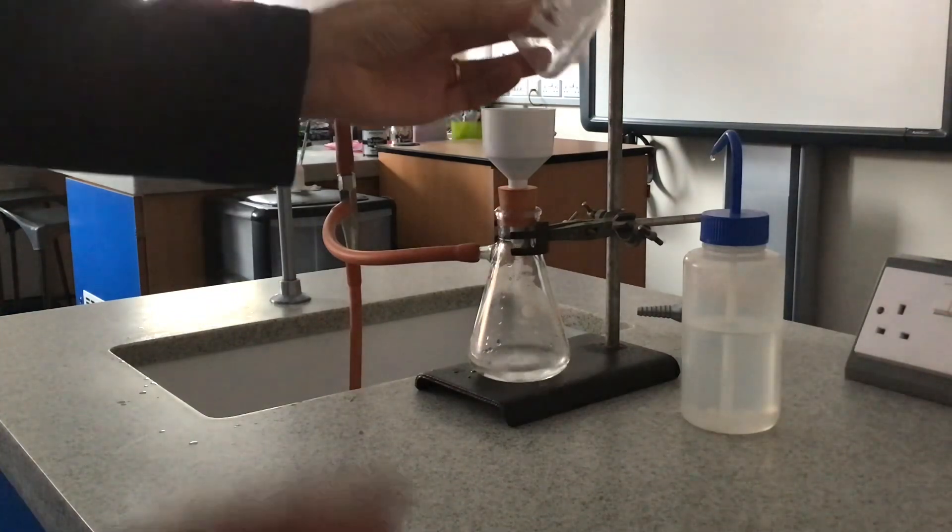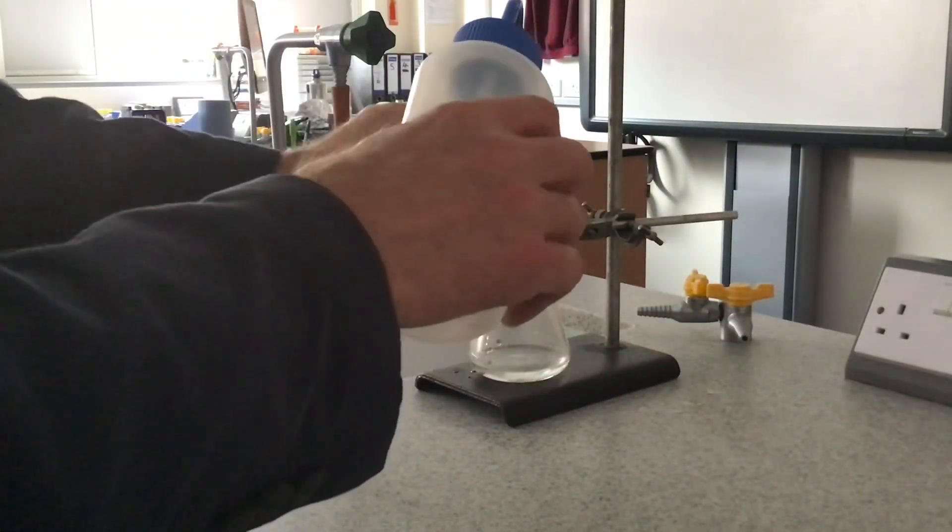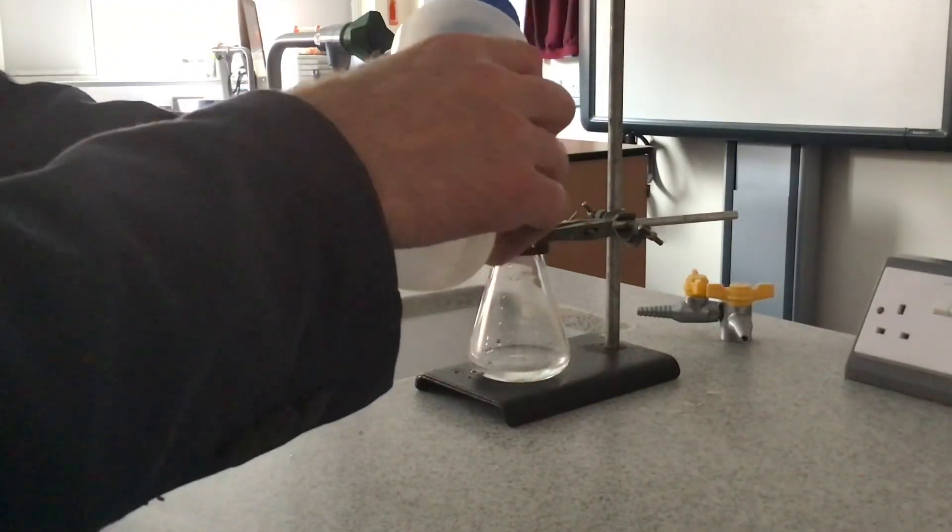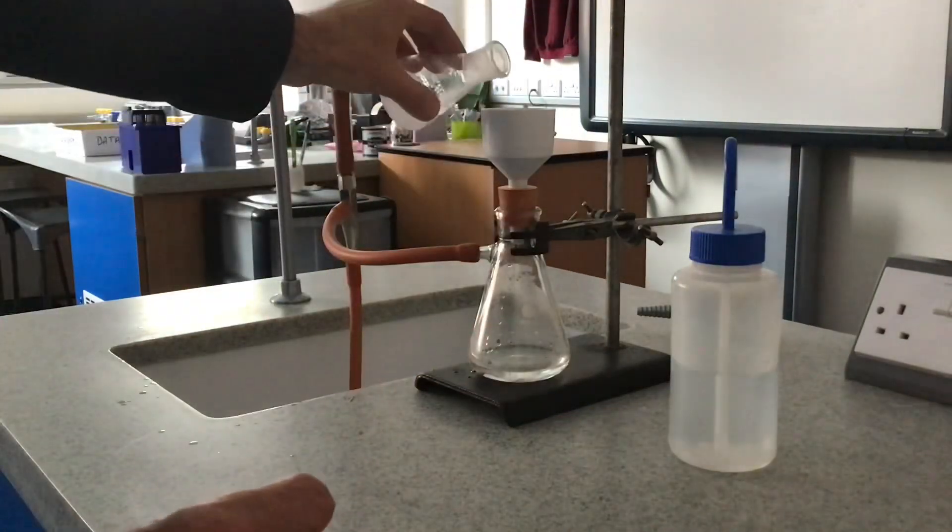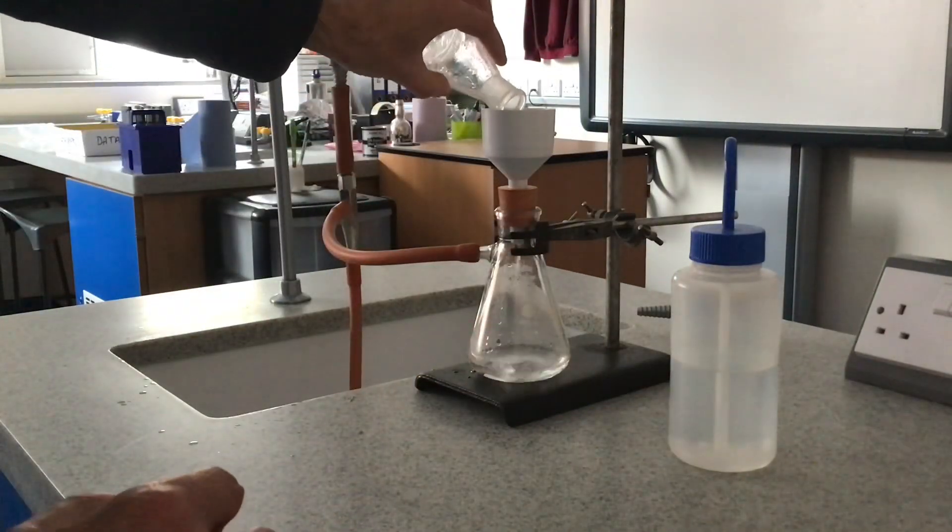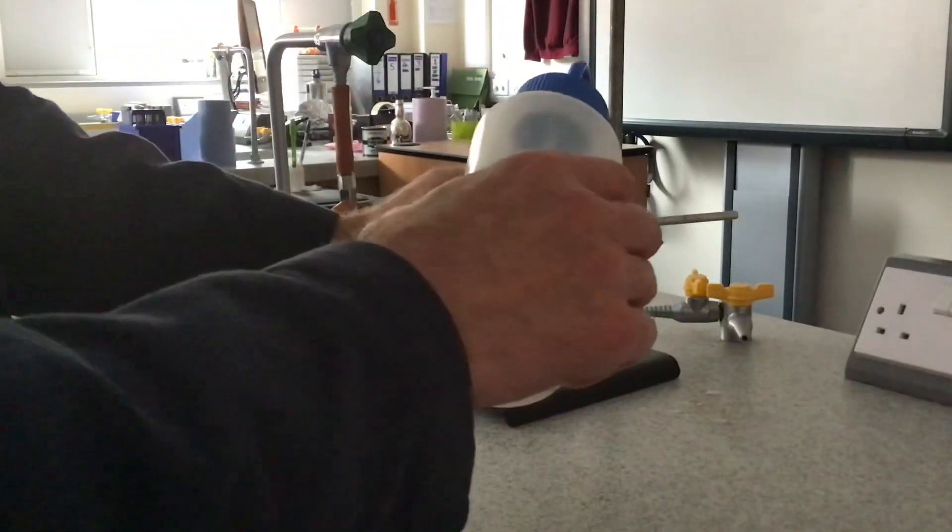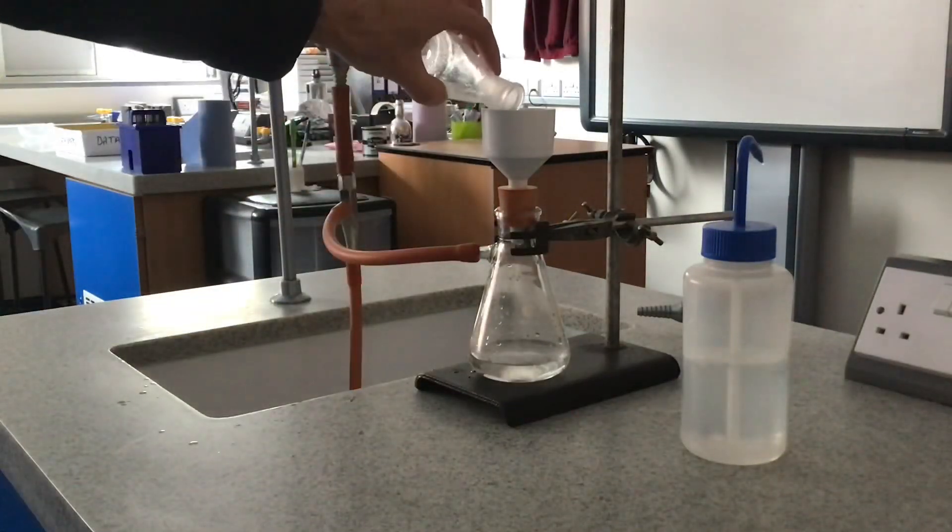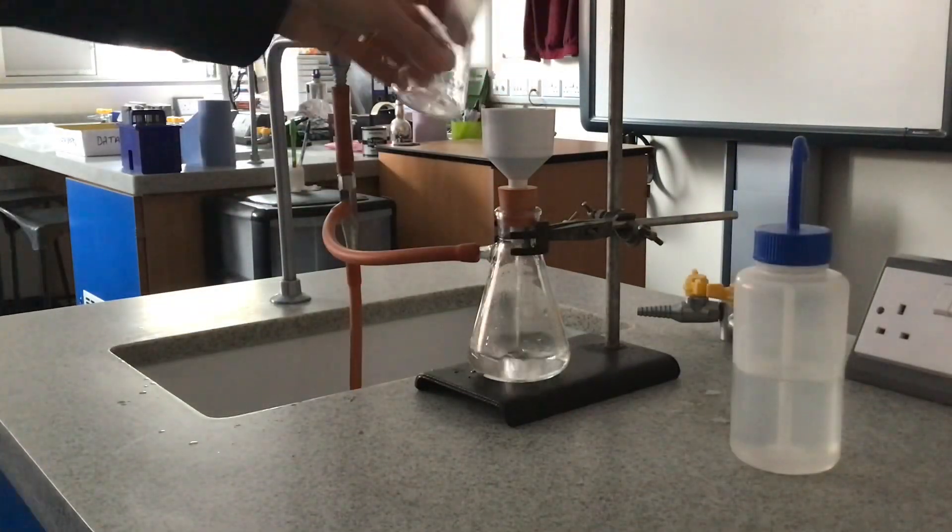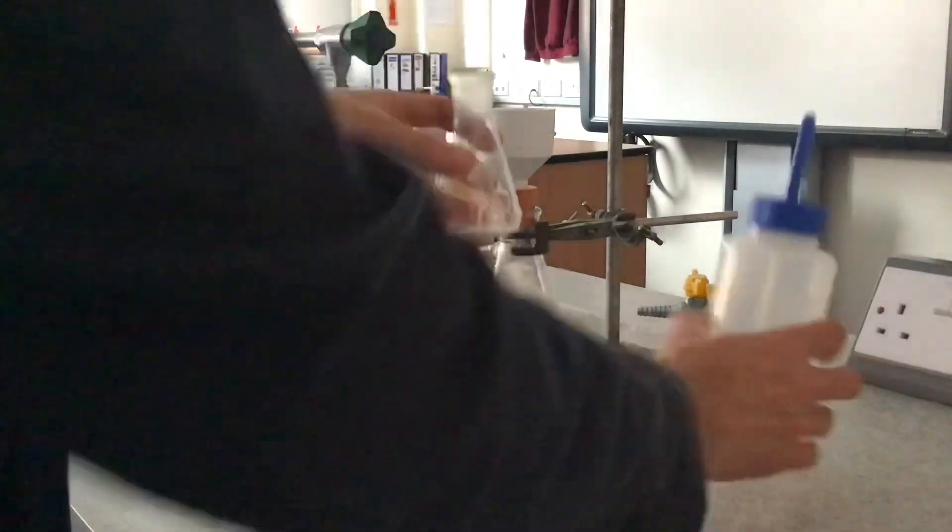You'll notice I've got quite a bit of solid still in the flask there, so I just need to rinse this out with the solvent that I'm using. This should be cold solvent so that we don't dissolve the solid. Just pour that through. Still got some in there so I'll just keep going with that. Last one.